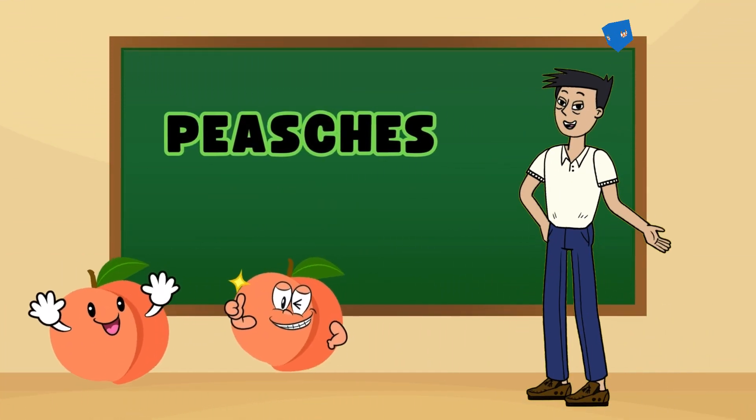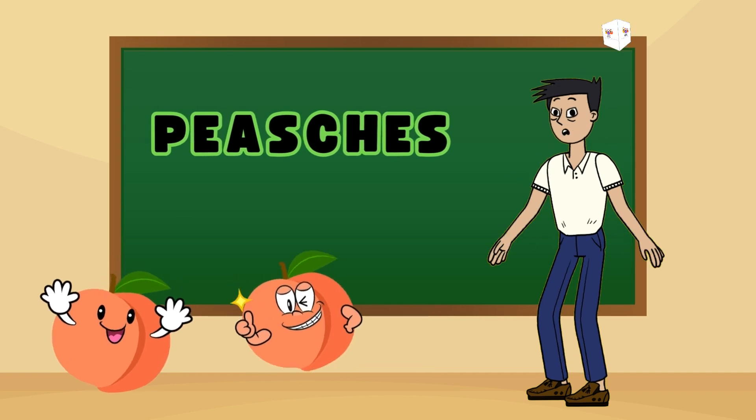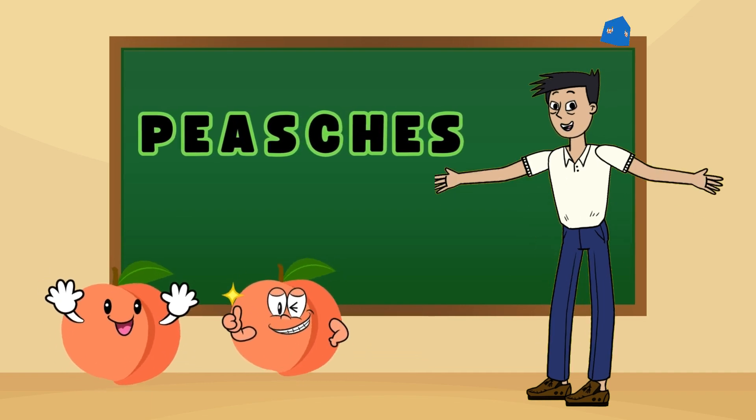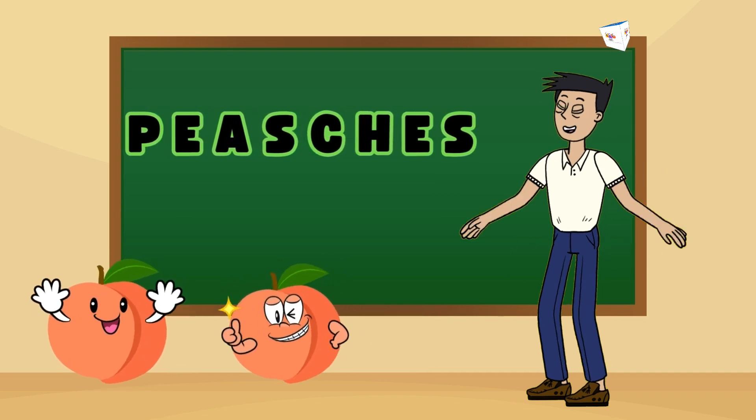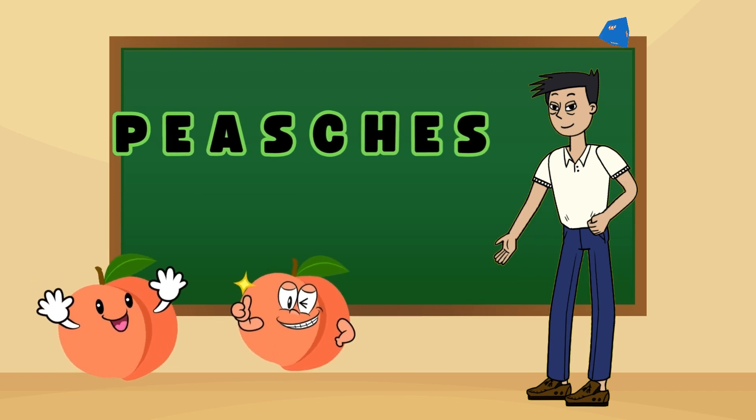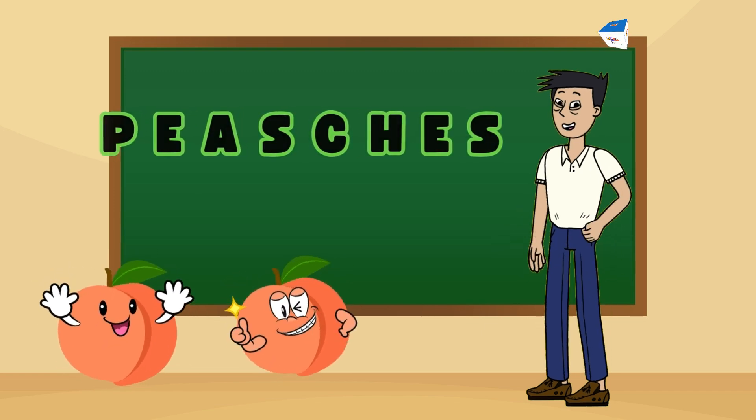This is peach. Peaches are very fuzzy and juicy. They are packed with vitamin A and C. You can eat them fresh, bake them in pies or blend them in smoothies. They are very delicious.